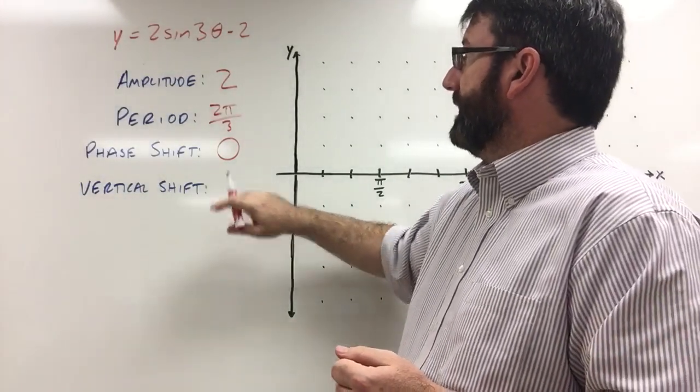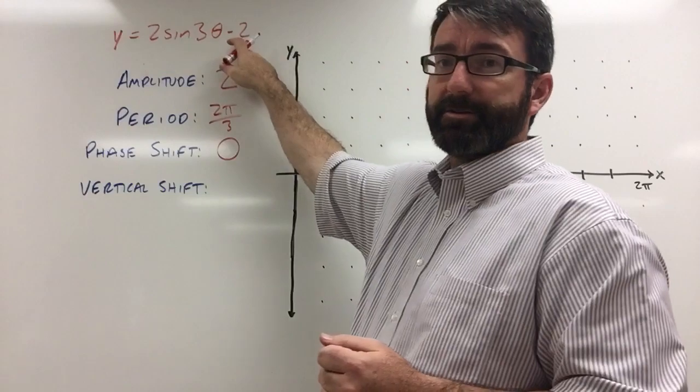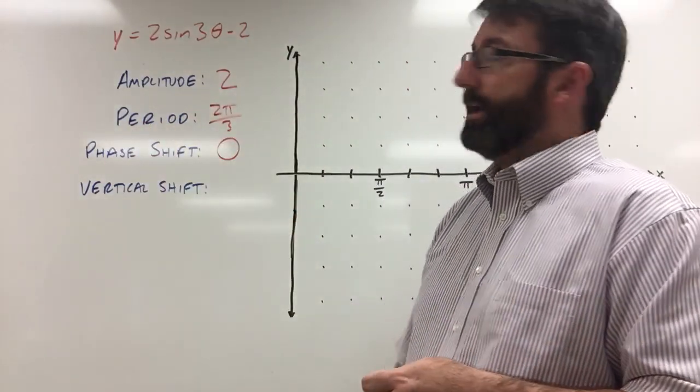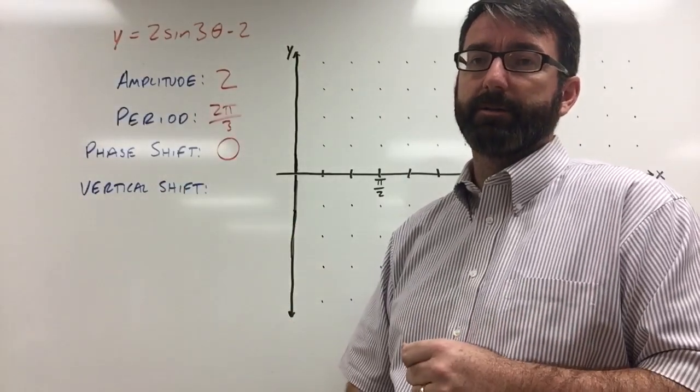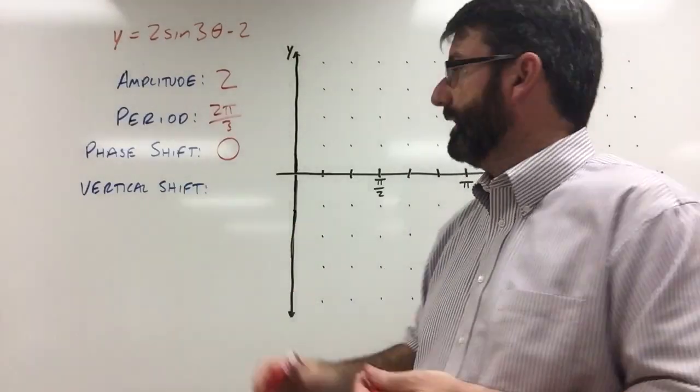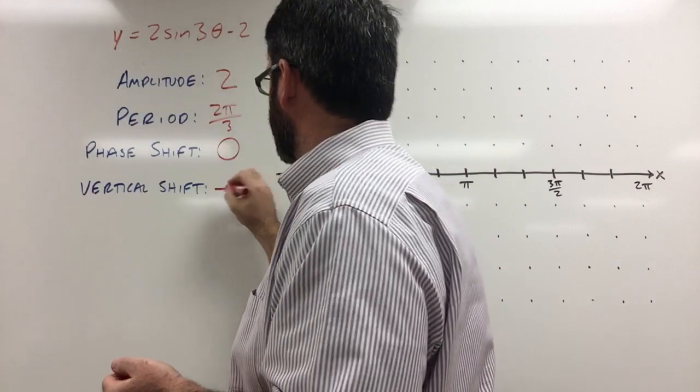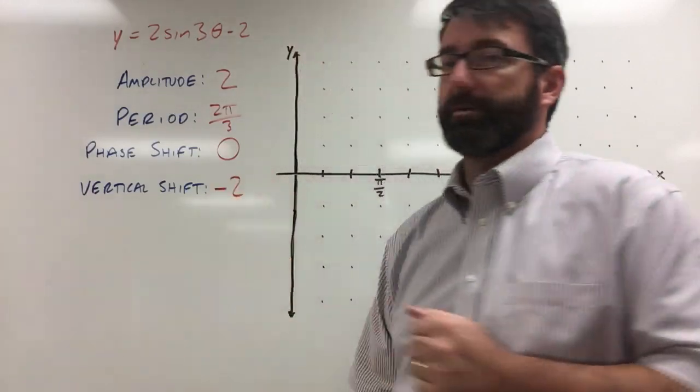The vertical shift is given by this number that we're adding or subtracting to the entire thing. Here we're subtracting 2, so we're going to shift our sine function down 2, and so we're just going to put negative 2 for our vertical shift.